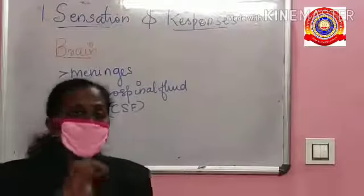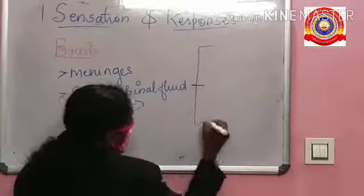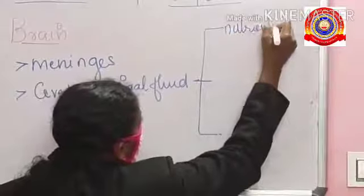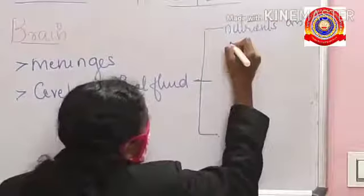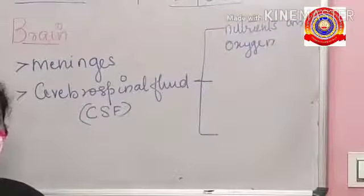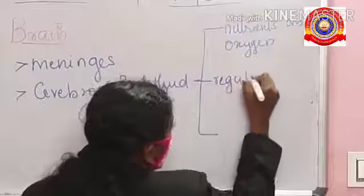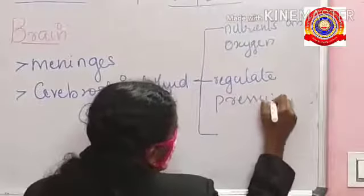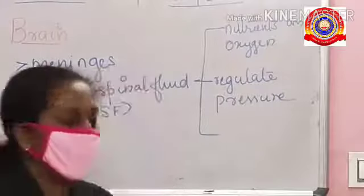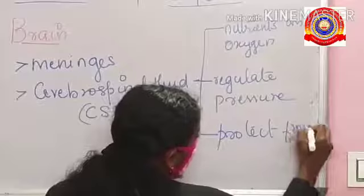Cerebrospinal fluid has three functions: it provides nutrients and oxygen to the tissues of the brain; it regulates the pressure inside the brain; and it also protects the brain from injuries.